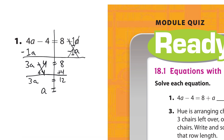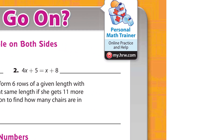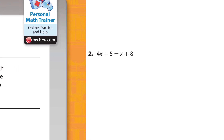Now we have 3 times a. The inverse of multiplication is division, so you divide by 3 — they cancel. But you have to do it to both sides of the equal sign, so divide this by 3 as well. 12 divided by 3 is 4, so the answer is a equals 4.